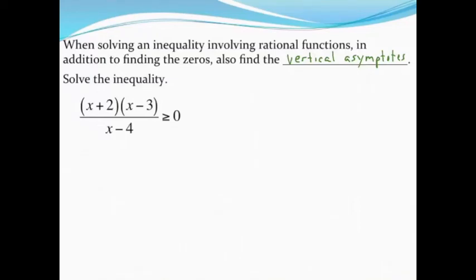When I'm solving a rational inequality, I'm going to use many of the same steps that we did when we solved a polynomial inequality. However, in addition to finding the zeros, because that's where our graphs changed directions before, I'm also going to find the vertical asymptotes, because in rational functions your graphs may also change directions at vertical asymptotes.